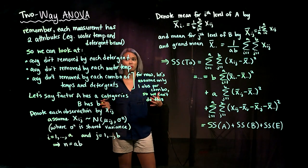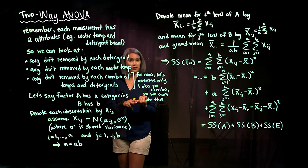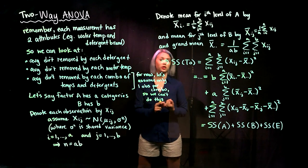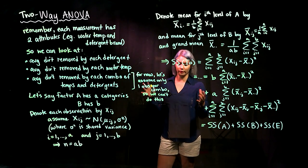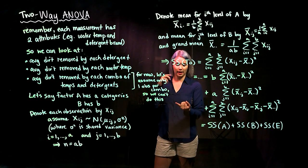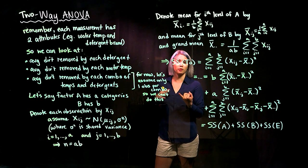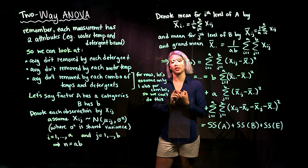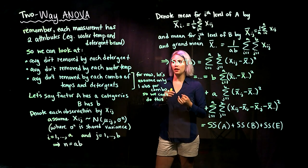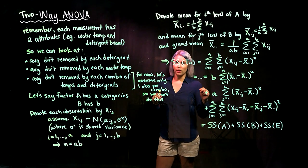For example, if our categorical variables are the water temperature and the brand of detergent, then every measurement we take — every experiment we run — we will have some detergent brand we're using, like Kirkland or Tide, and then the water temperature: cold, warm, or hot. So each measurement has two attributes.